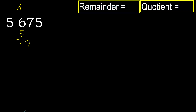Next: bring down to get 17. 5 multiplied by 4 is 20 — 20 is not greater than 17... wait, 5 multiplied by 3 is 15 — 15 is not greater. Subtract.